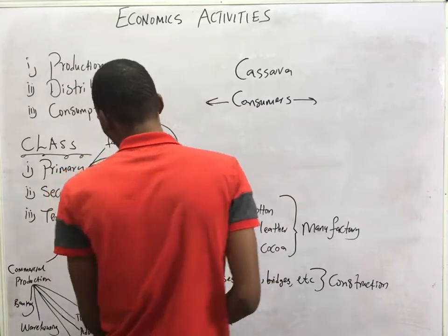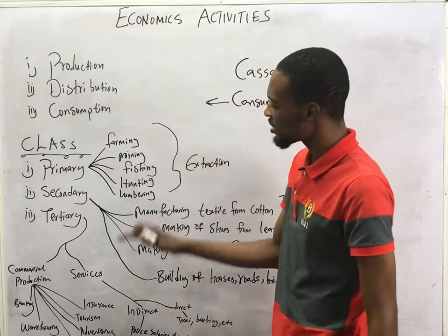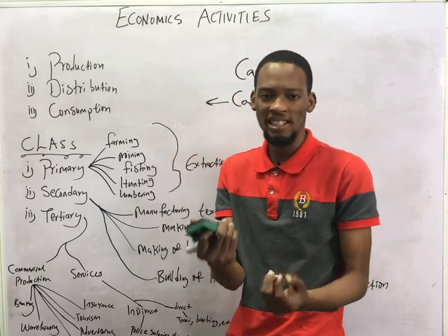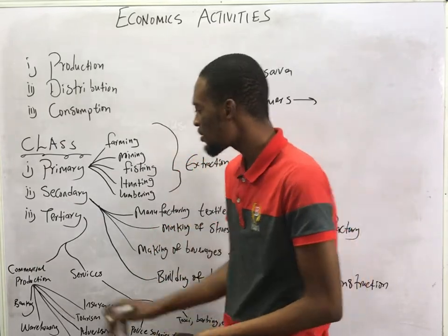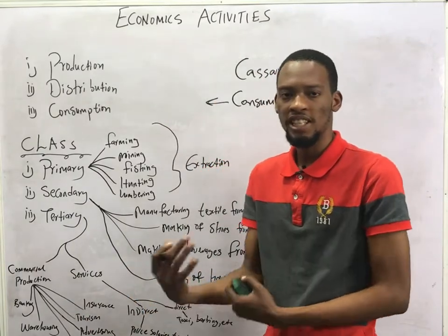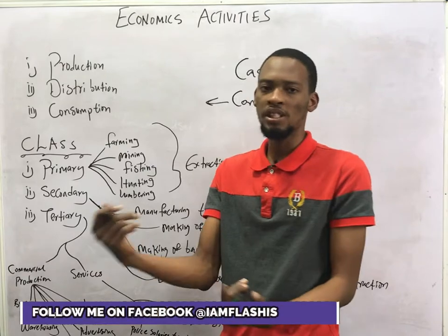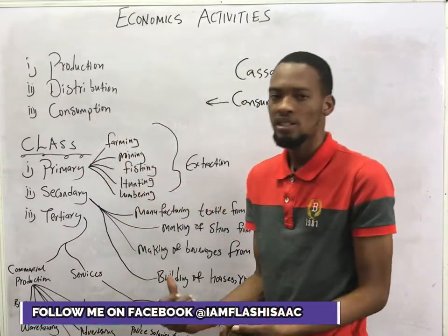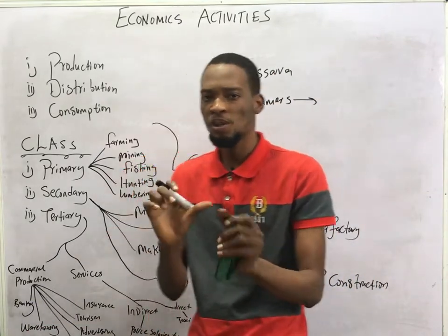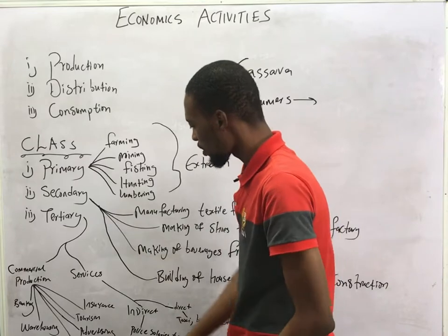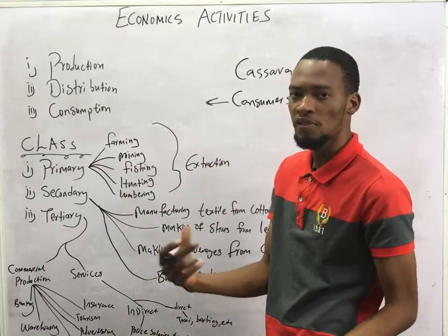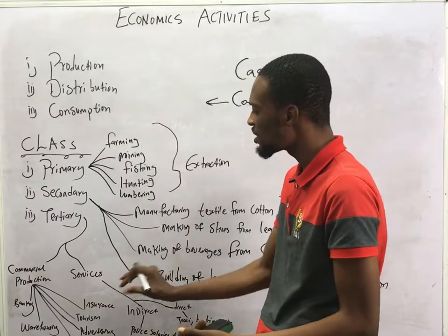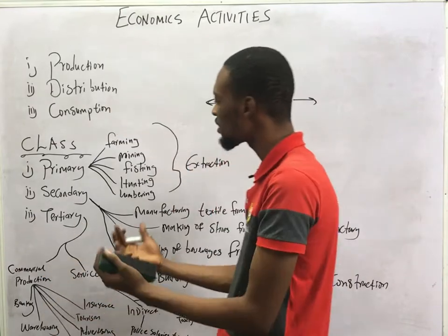Another branch of tertiary activities is commercial production. Commerce deals with buying and selling and business generally. Commercial production includes banking and financial institutions where you keep money or take loans, and where money is circulated. Warehousing is storing your goods to avoid wastage. Transportation involves moving goods from one location to another. Tourism, advertising — promoting your goods and services — and insurance are also under commercial production and tertiary activities.